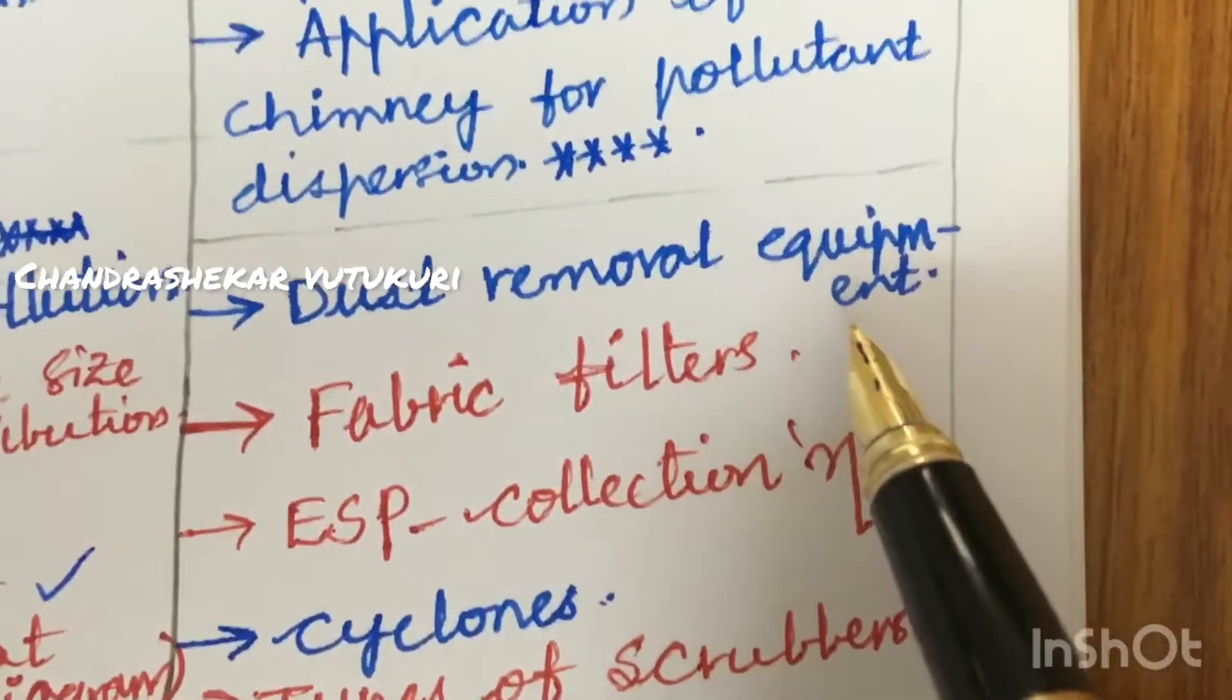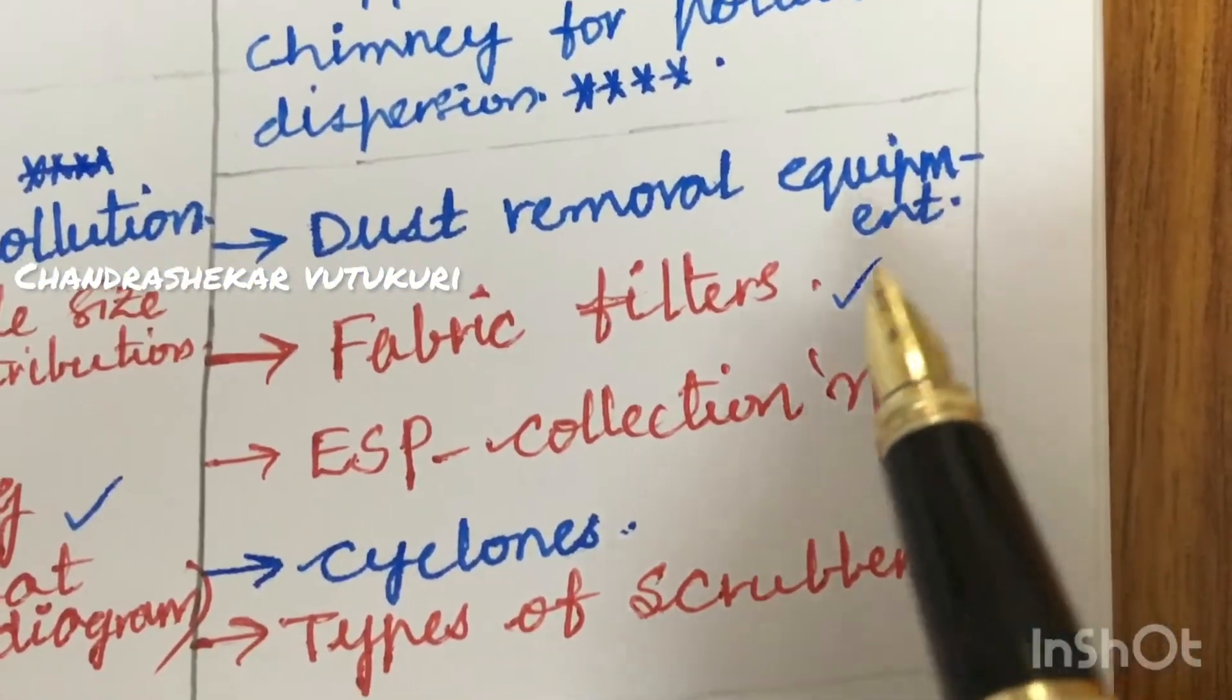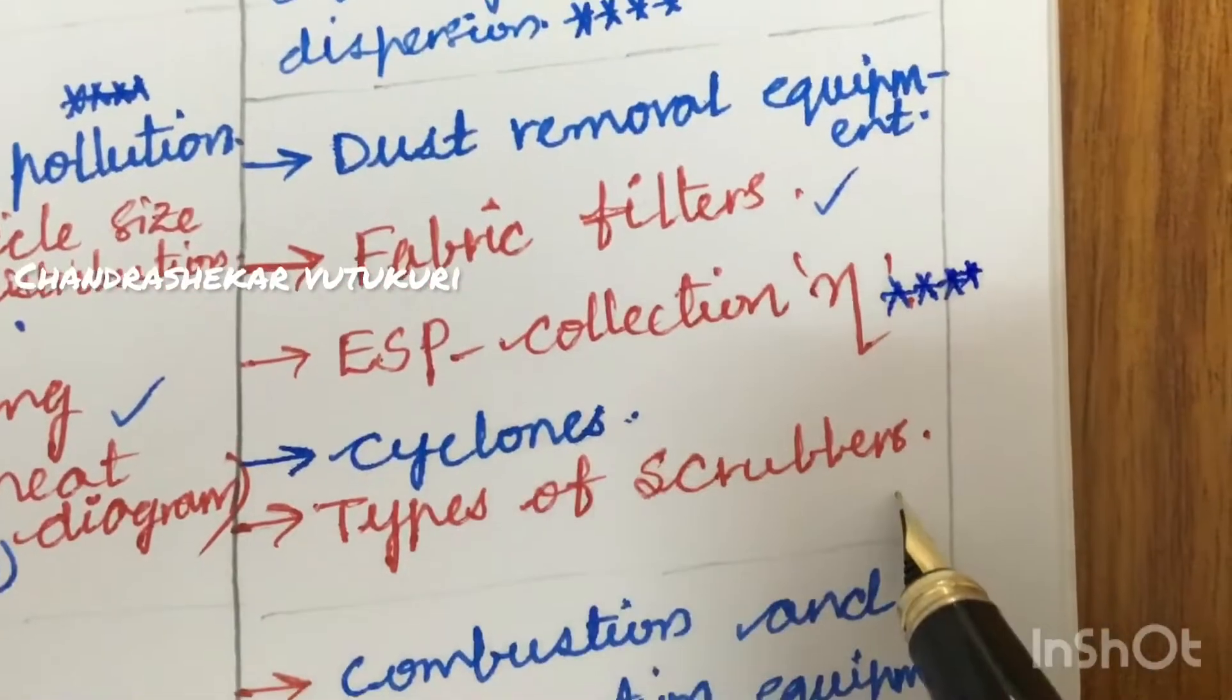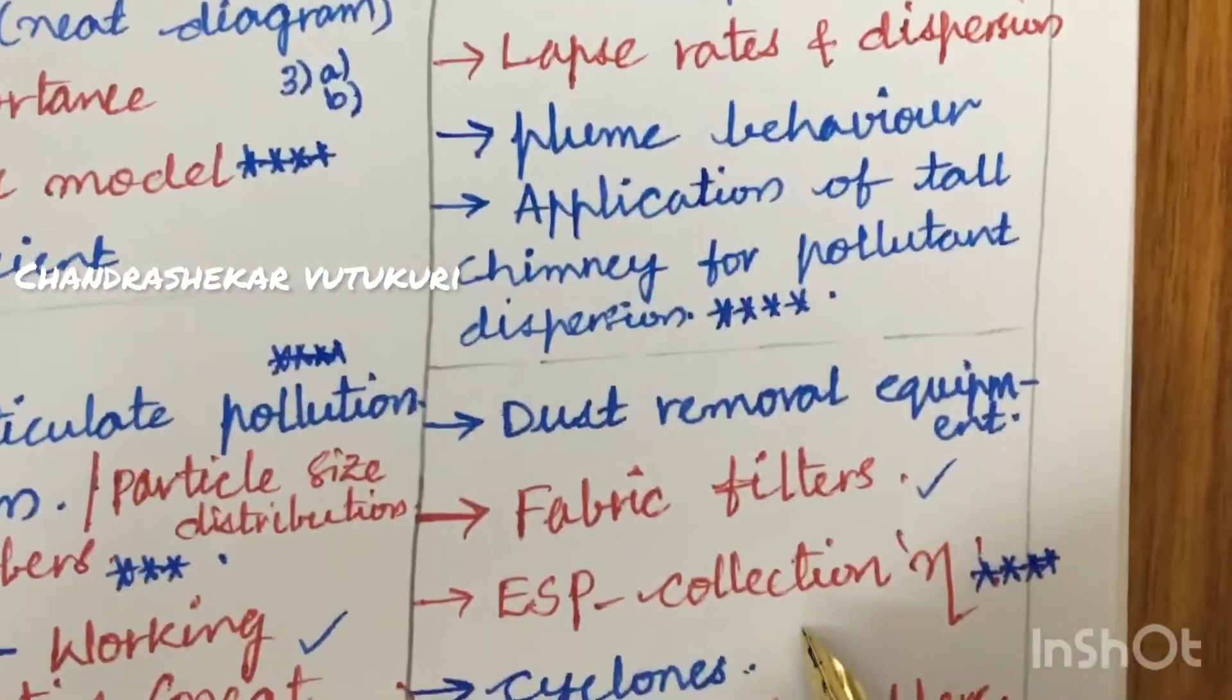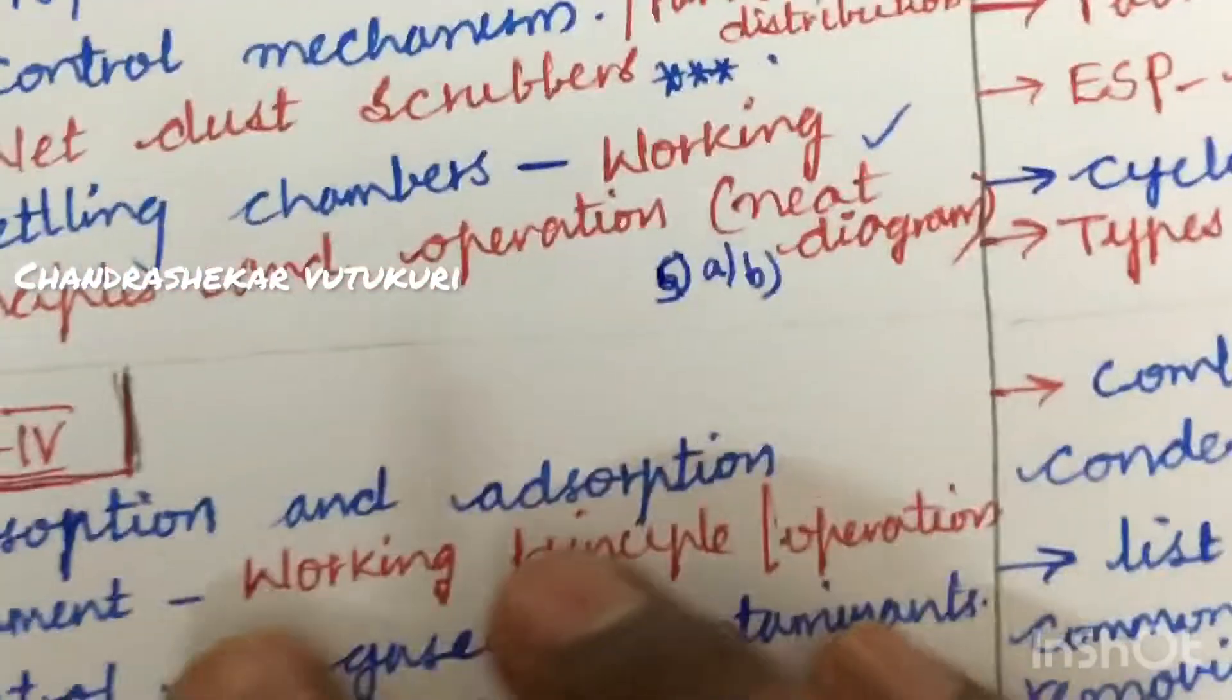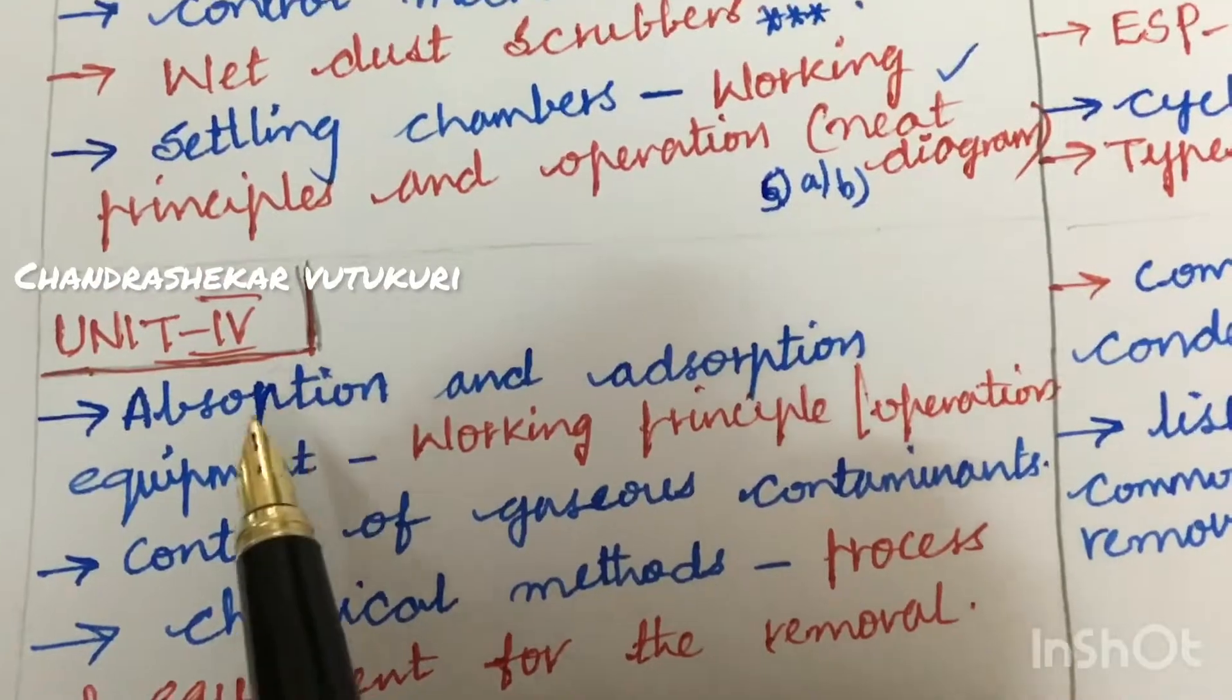Later, the dust removal equipment and the fabric filters and its purpose and usage and the applications and ESP and the collection efficiency is said to be very very important and gunshot question. And the types of scrubbers and the cyclone - from this part, we can expect the question as, sorry this is 5A and this is all about 6A as well as 6B, dear students. I have taken into consideration Unit 4 also. Please do work out all these questions to score good marks, dear students.